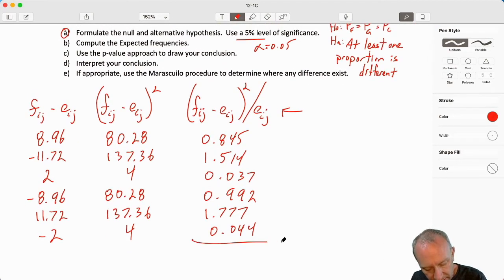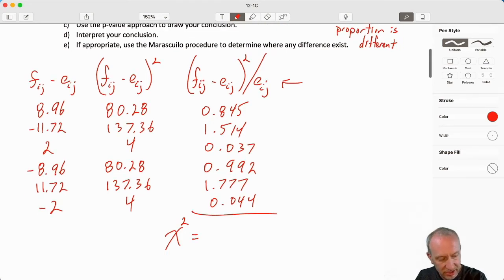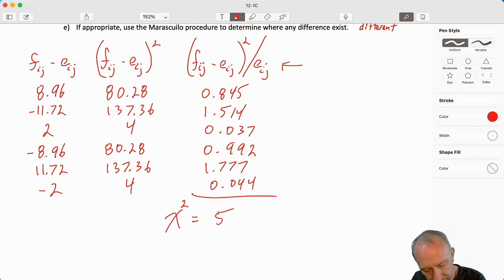And now I'm going to add all of these together. And that's going to give me my chi-squared. So I'm going to just add up, starting with that last one that I calculated. So plus 1.777 plus 0.992 plus 0.037 plus 1.514 plus 0.845. And that gives me my chi-squared of 5.2.